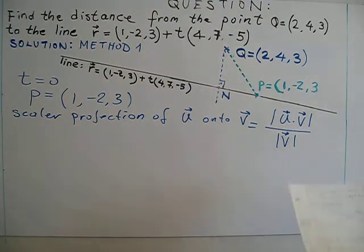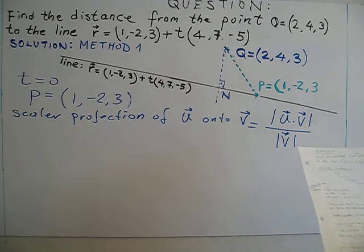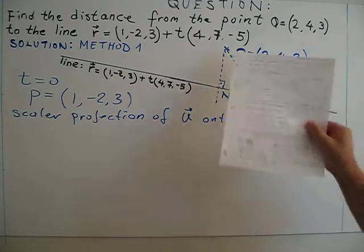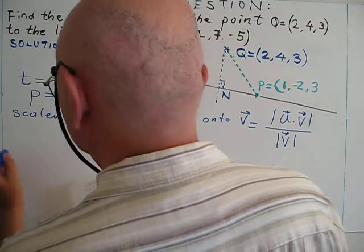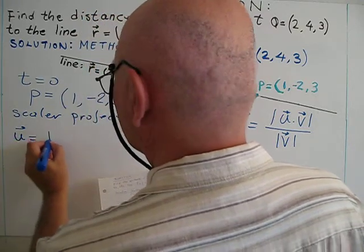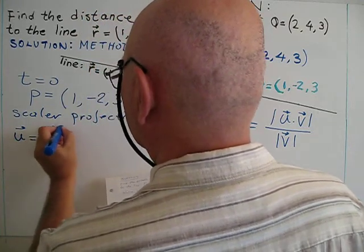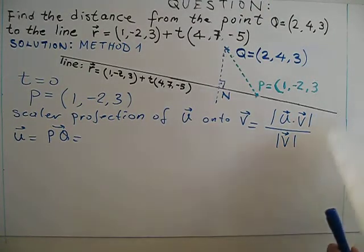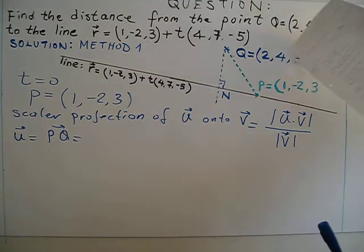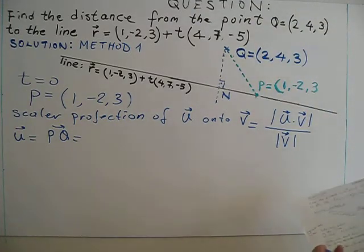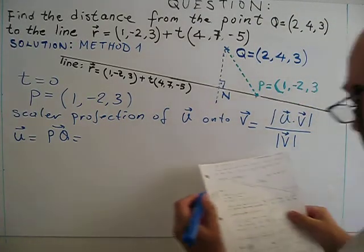So this is the general formula. How can we adjust this formula for our specific problem? So basically u is vector u here PQ. How do I find PQ? From this point, coordinate of this point, I subtract point Q.